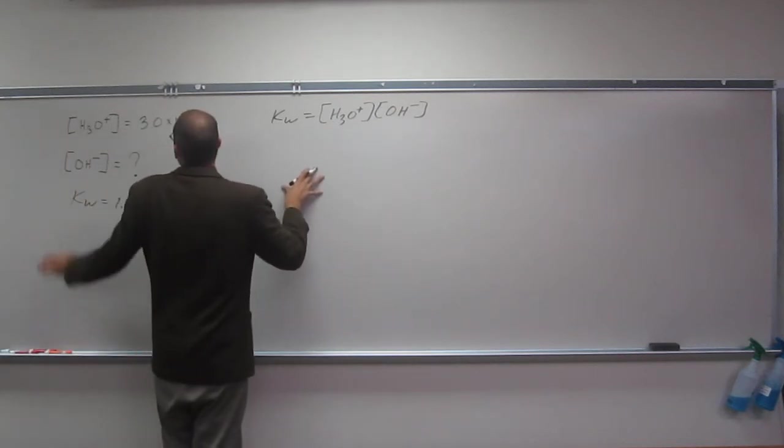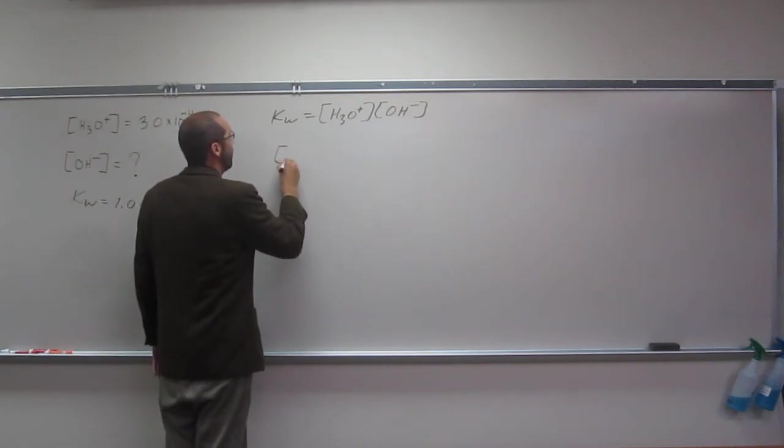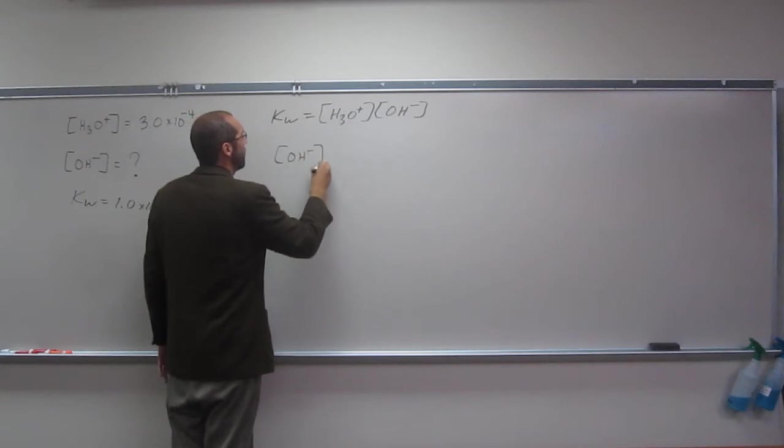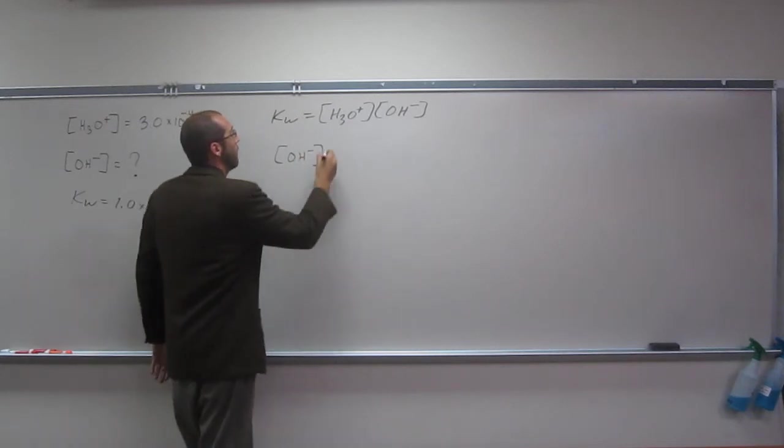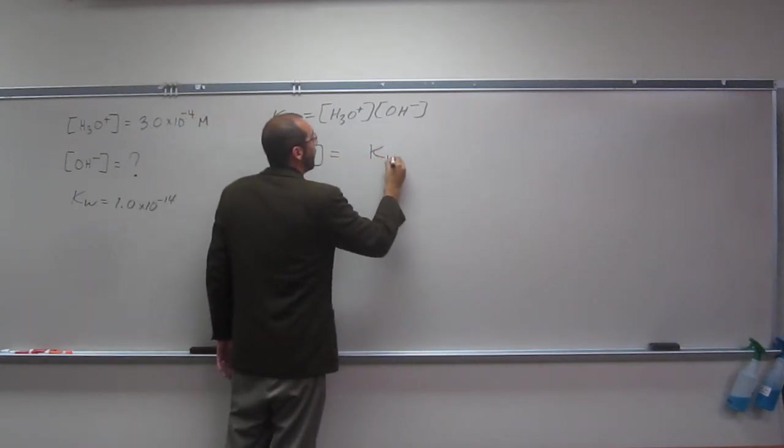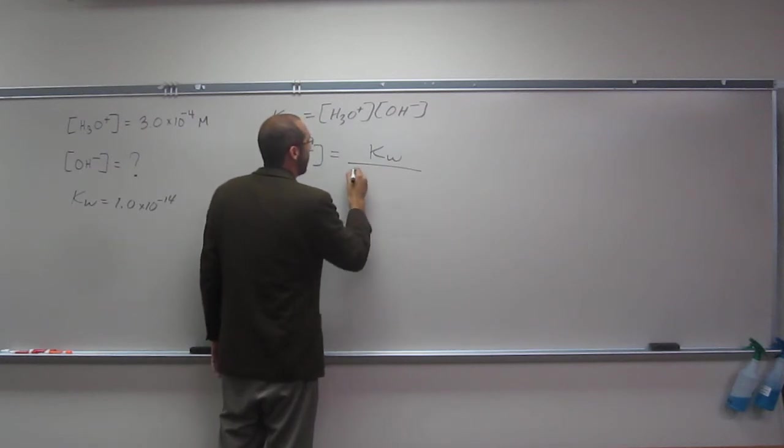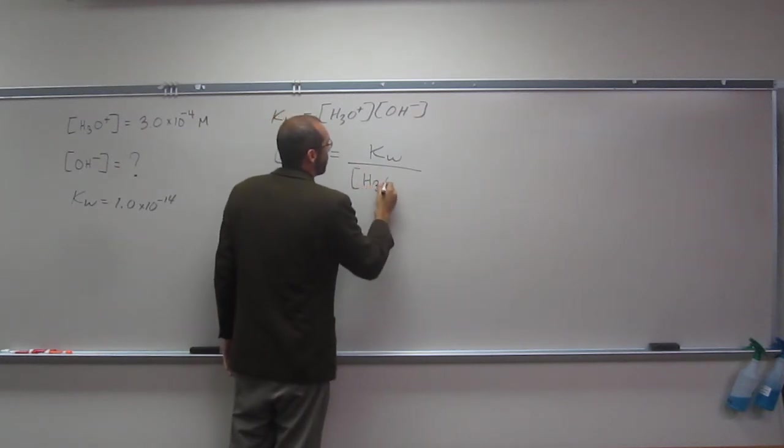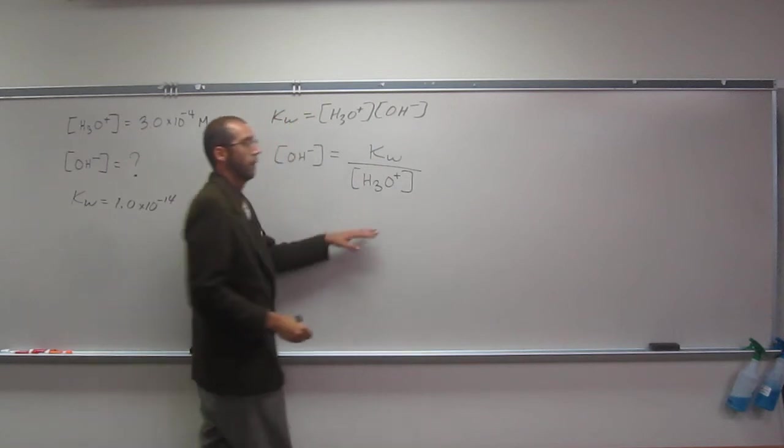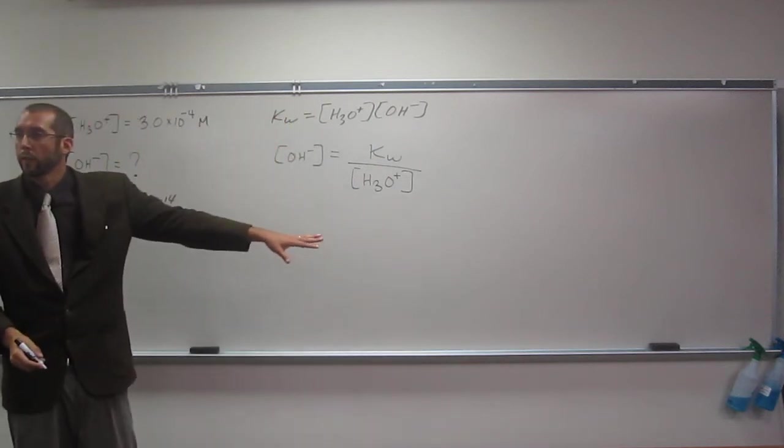So we want OH minus, so rearrange this equation. OH equals KW divided by H3O plus, like that. Is everybody okay with doing something like that?